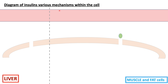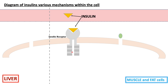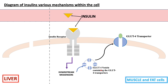Here we have a diagram of insulin's various mechanisms within the cell — this is a hypothetical cell. We have the liver here, and then the muscle and fat cell here. Within the muscle and fat cell, we have the insulin receptor, and insulin binds this receptor. When this happens, there is a cascade of signal transduction events and multiple downstream messengers involved. These downstream messengers will cause the GLUT4 vesicles — which contain the GLUT4 transporters — to embed themselves in the cell membrane.